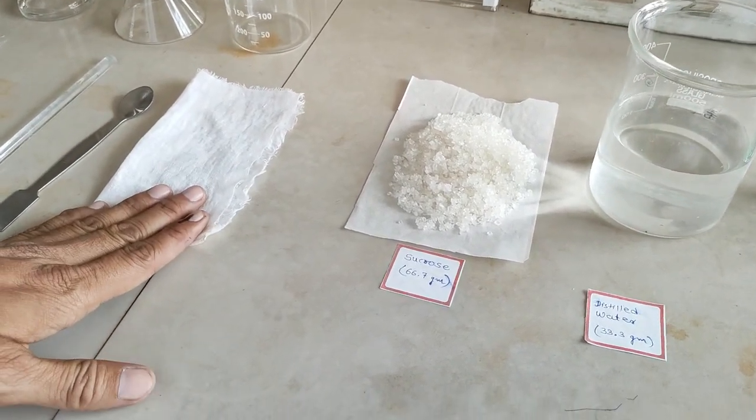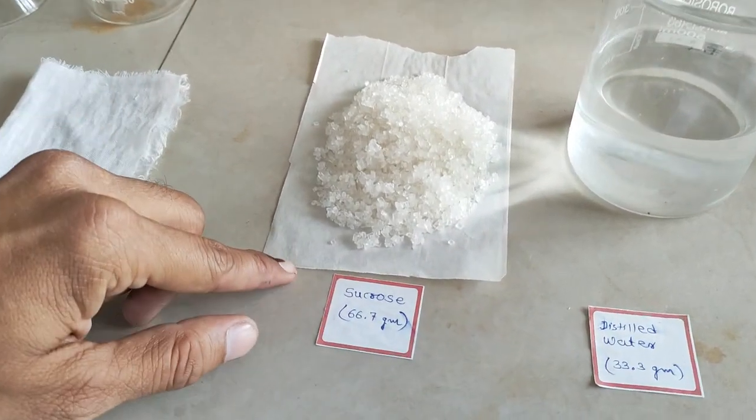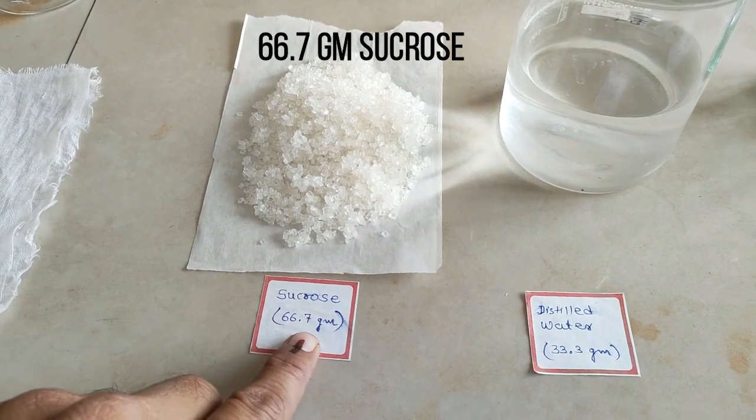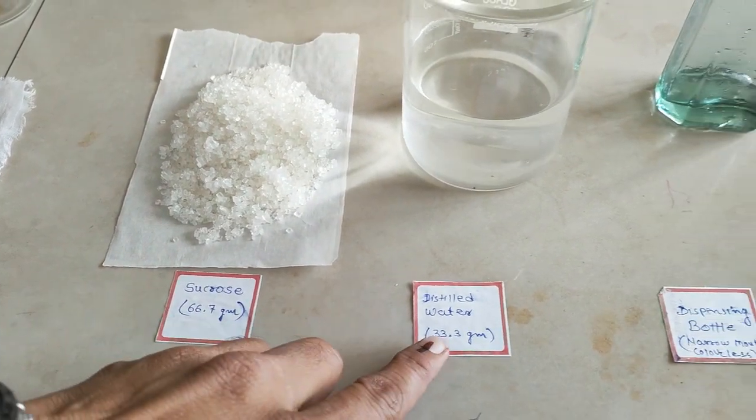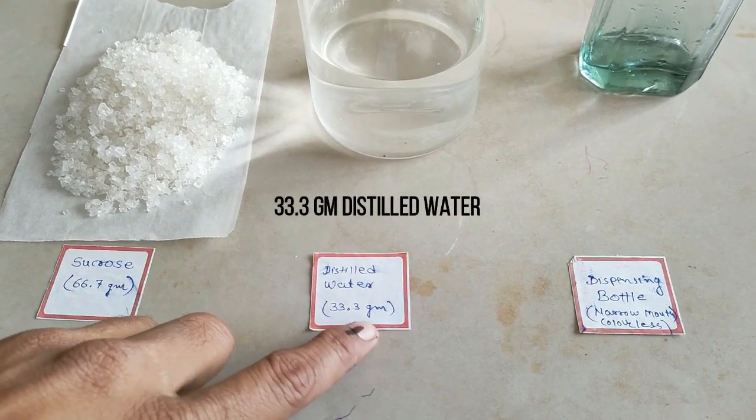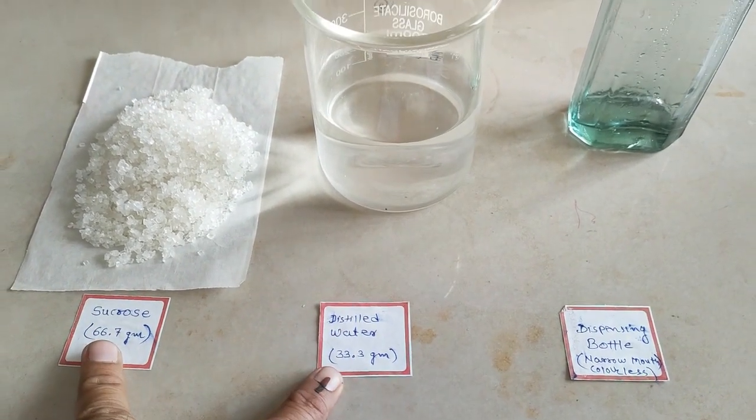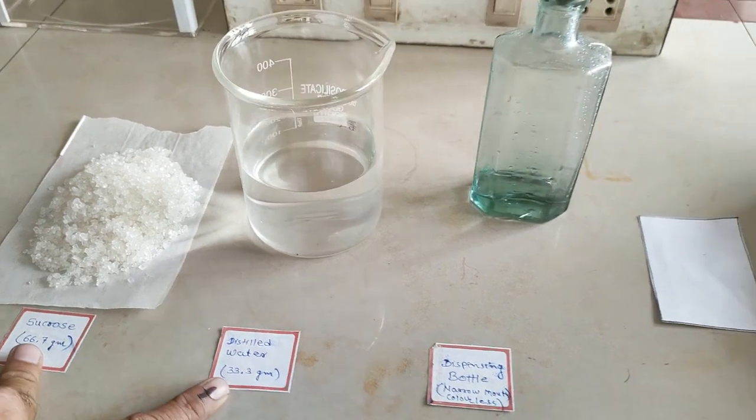For the preparation of simple syrup, we require 66.7 grams of sucrose and 33.3 grams of distilled water. Combined together, it is going to make 100 grams of simple syrup IP.